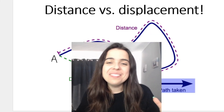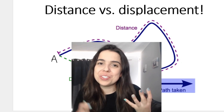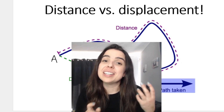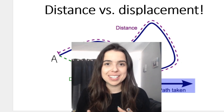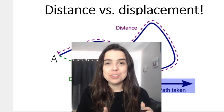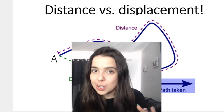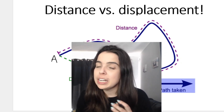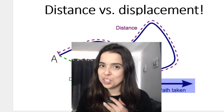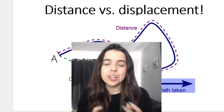In this video, we're going to be looking at distance versus displacement, and this forms part of a section called motion in one dimension. I love this example because it really shows the difference between distance and displacement. First of all, just remember that distance is a scalar quantity. That means it only needs a magnitude — it doesn't need a direction.